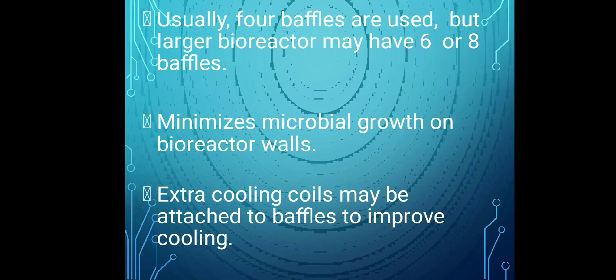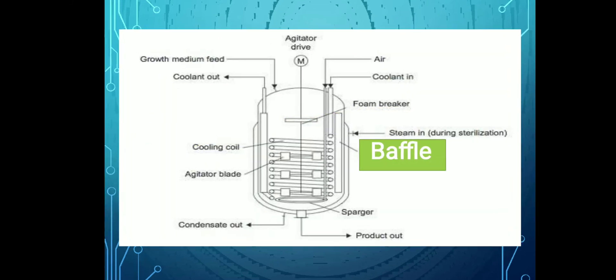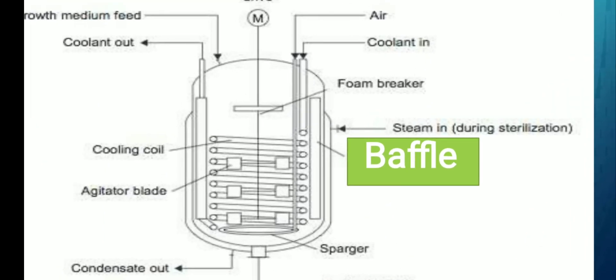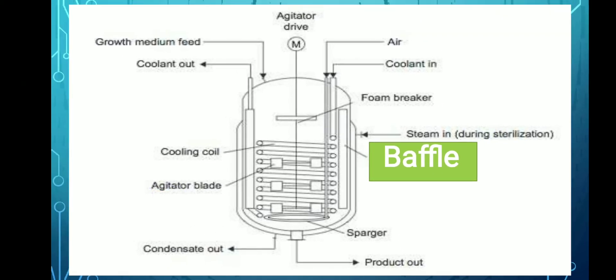Microbial and cell growth on bioreactor walls should always be minimized. Extra cooling may be attached to the baffles to improve cooling. Inside the bioreactor, components visible include cooling coils, foam breakers, air inlet, and baffles.